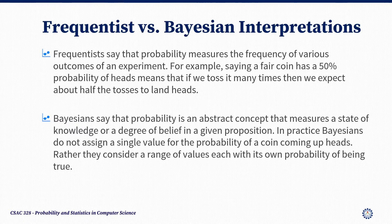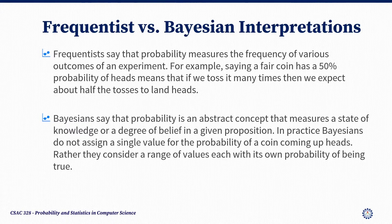In practice, Bayesians do not assign a single value for the probability of a coin coming up heads. Rather, they consider a range of values, each with its own probability of being true. In this course, we will study and compare these approaches. The frequentist approach has long been dominant in fields like biology, medicine, public health, and social sciences. The Bayesian approach has enjoyed a resurgence in the era of powerful computers and big data, and you will also meet it in subjects like computer science, artificial intelligence, and machine learning. It is especially useful when incorporating new data into existing statistical models, for example when training a speech or face recognition system.